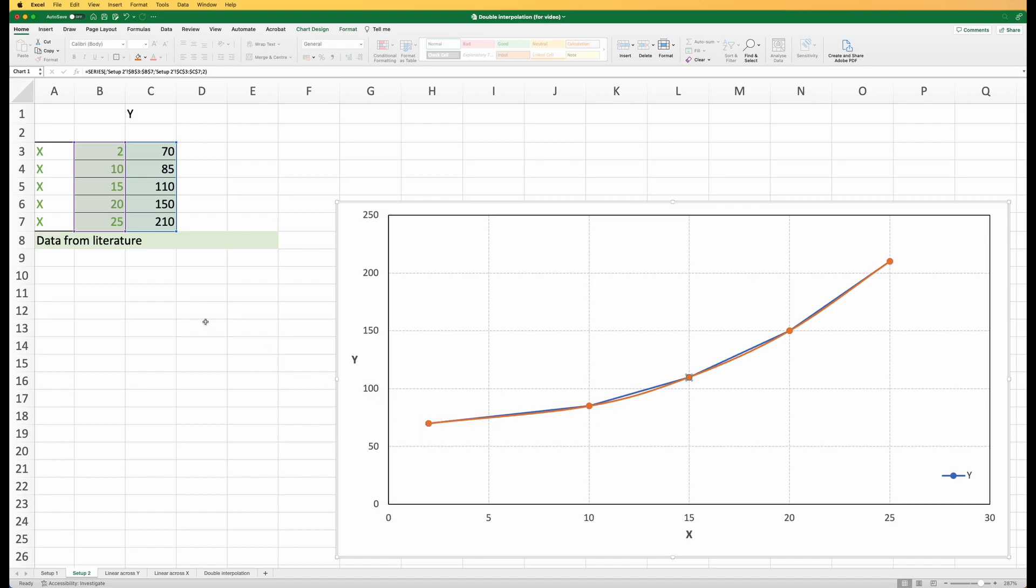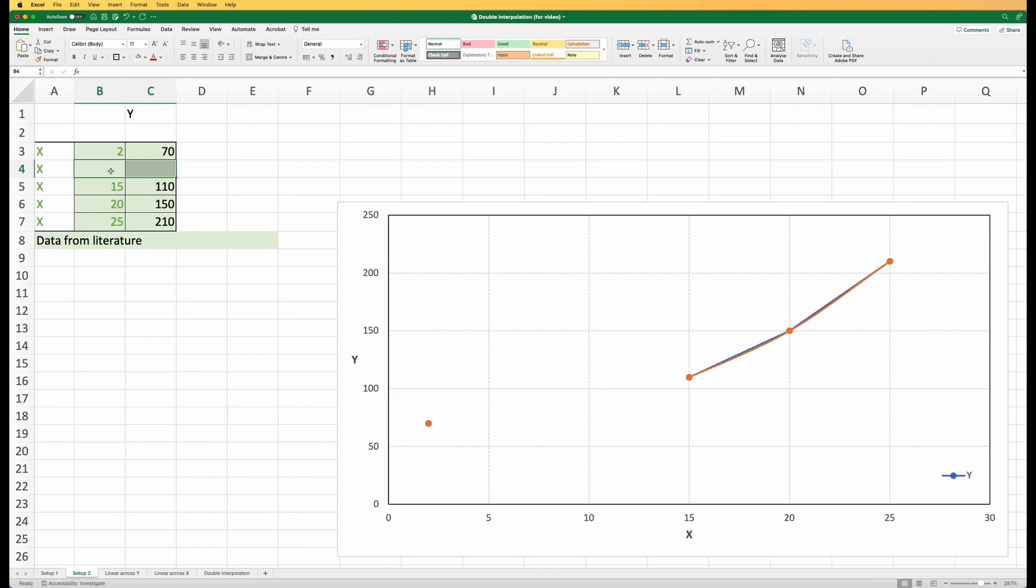In linear interpolation, if we have an X value that's unknown - let me just delete here for example - if we have a gap here and we wanted to know what is the value at 8 or some other value, how can we use the value of 2 and 15 to now get the information in this missing space?